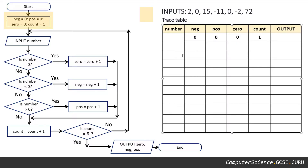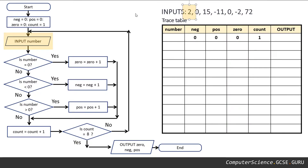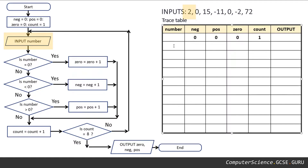We've followed those instructions and documented any changes in the trace table. We move on. We're now going to input our first value, which is going to be stored as a variable called number. Our first value is two, so number becomes two.